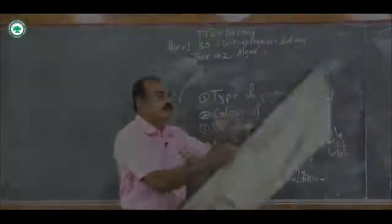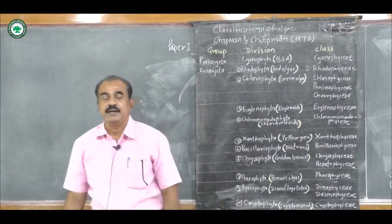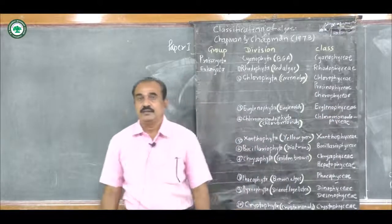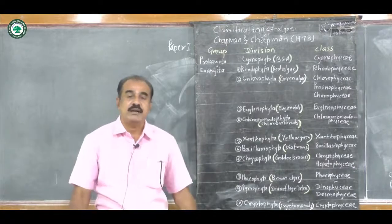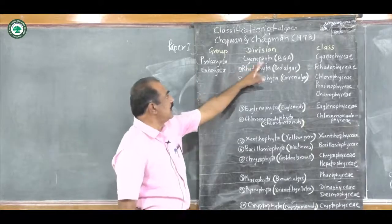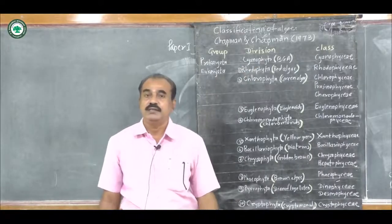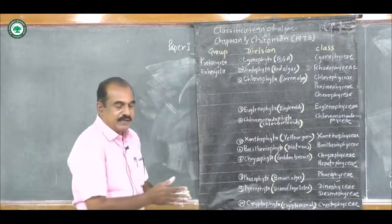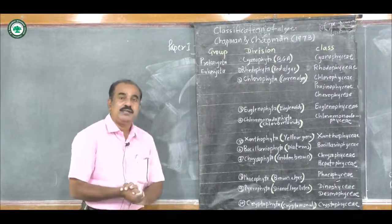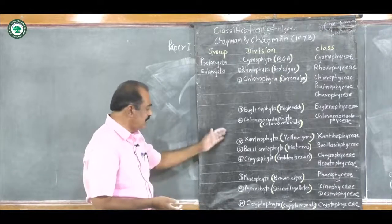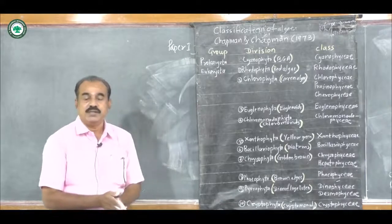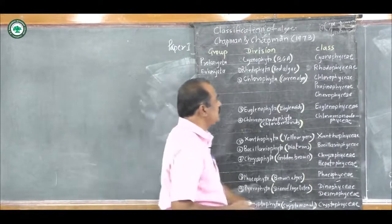Chapman and Chapman divided all the Algae into two groups, with eleven divisions and fifteen classes, prepared on the basis of morphological and biochemical characters. The first group is Prokaryota, which has only one division: Cyanophyta, in which all the blue-green algae are included, with class Cyanophyceae. The second group is Eukaryota, where the major algae are included, with ten different divisions. The first division is Rhodophyta — called red algae based on color — with one class: Rhodophyceae. The second division is Chlorophyta, called green algae because chlorophyll pigment is dominant, divided into three classes: Chlorophyceae, Prasinophyceae, and Charophyceae.